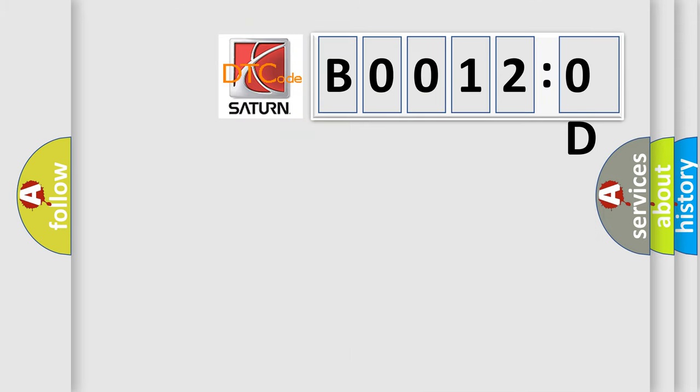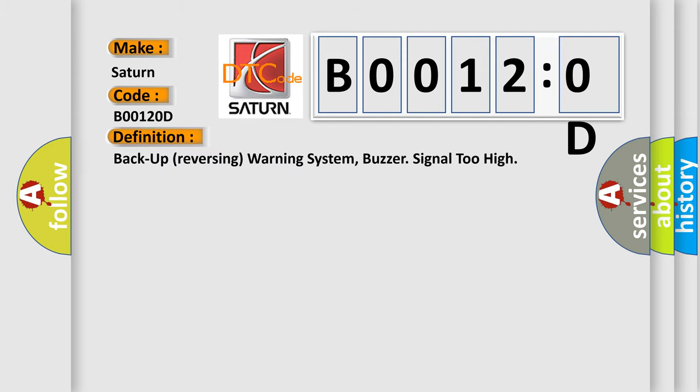So, what does the Diagnostic Trouble Code B00120D interpret for Saturn car manufacturers? The basic definition is backup reversing warning system buzzer signal too high. And now this is a short description of this DTC code.